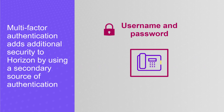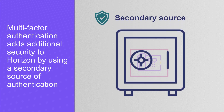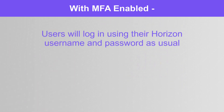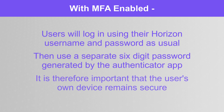Multi-factor authentication adds an additional layer of security to your Horizon accounts by using a second source of authentication on top of your username and password. When enabled, users will be required to input their Horizon username and password as usual, as well as a separate six-digit password generated by the Authenticator app. This can help ensure strict user verification as long as the user's own device remains secure.